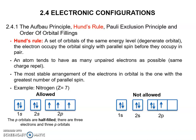Next is Hund's rule. Hund's rule states that for a set of orbitals of the same energy level, electrons occupy the orbitals singly with parallel spin before they occupy in pairs. An atom tends to have as many unpaired electrons as possible. The most stable arrangement of electrons in the orbital is the one with the greatest number of parallel spins.